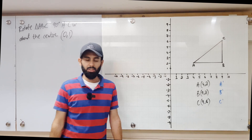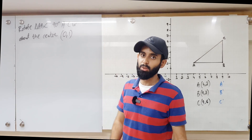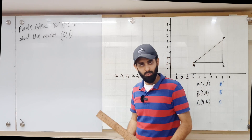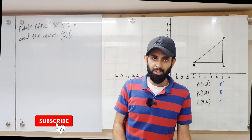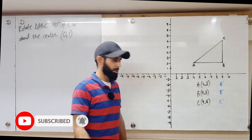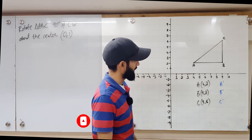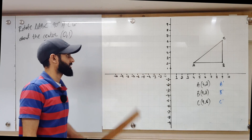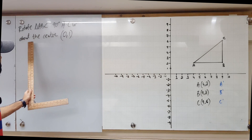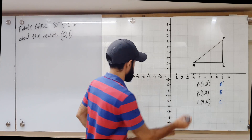Welcome to my channel Mathlete. I'm Sal Salim with another video on rotation. In this video, I'm going to be teaching you how to rotate an object about a certain center, and we're going to be doing that with the help of an example. Here we have triangle ABC, and the question is to rotate triangle ABC 90 degrees anti-clockwise about the center (0, 1).